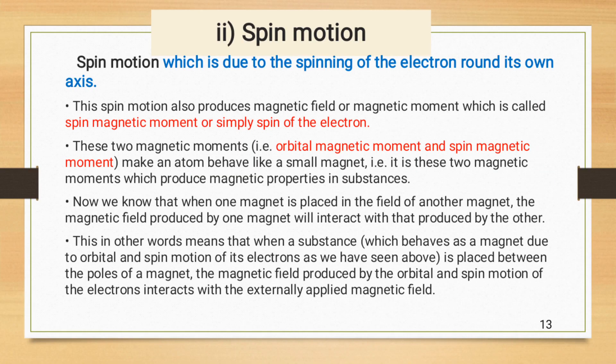Second is spin motion, spin motion which is due to the spinning of electron around its own axis. An electron rotates clockwise or anti-clockwise. This spin motion also produces magnetic field or magnetic moment which is called spin magnetic moment or simply spin of the electron.